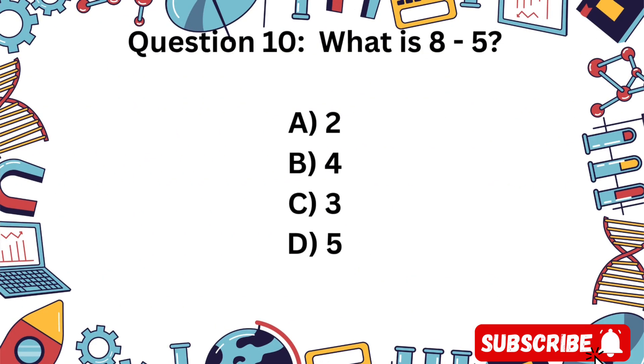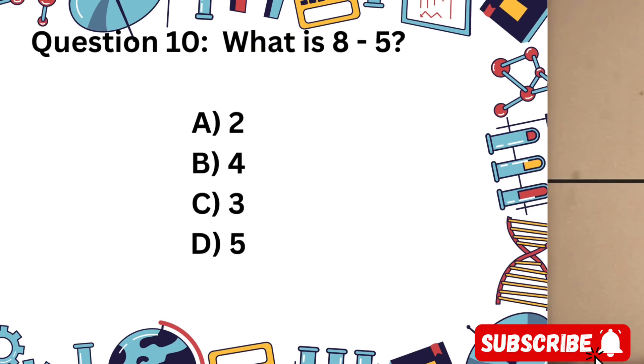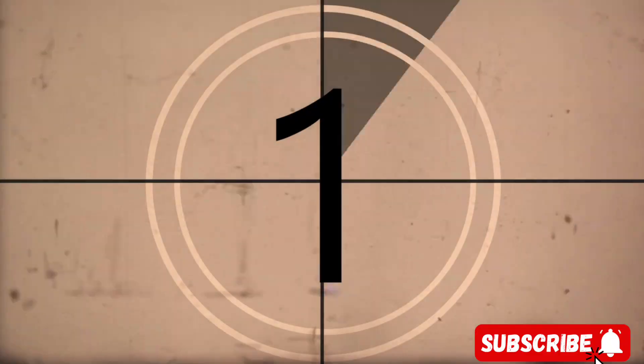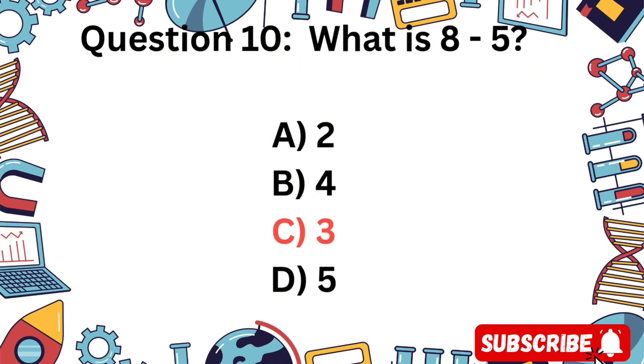Question 10. What is 8 minus 5? A) 2, B) 4, C) 3, or D) 5? Well done! 8 minus 5 equals 3.